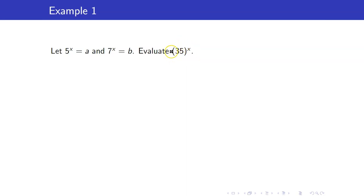In order to evaluate this, we just have to write this in terms of 5^x and 7^x because we have the values for these expressions. Take note that 35^x can be written as (7×5)^x. And using properties of exponents, (7×5)^x is the same as 7^x × 5^x.